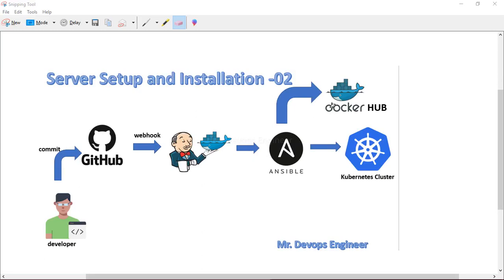Hello and welcome back to my channel. Here I will be demonstrating the second video in the series on Kubernetes deployment using Jenkins CI/CD pipelines. As we discussed in the previous video, we need three servers: one for Jenkins, one for Ansible, and one for the Kubernetes cluster.